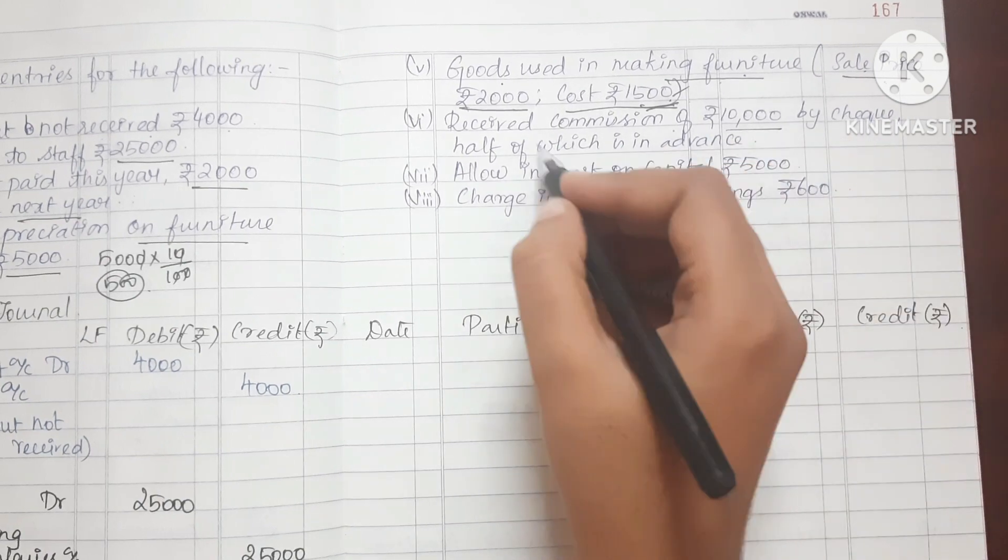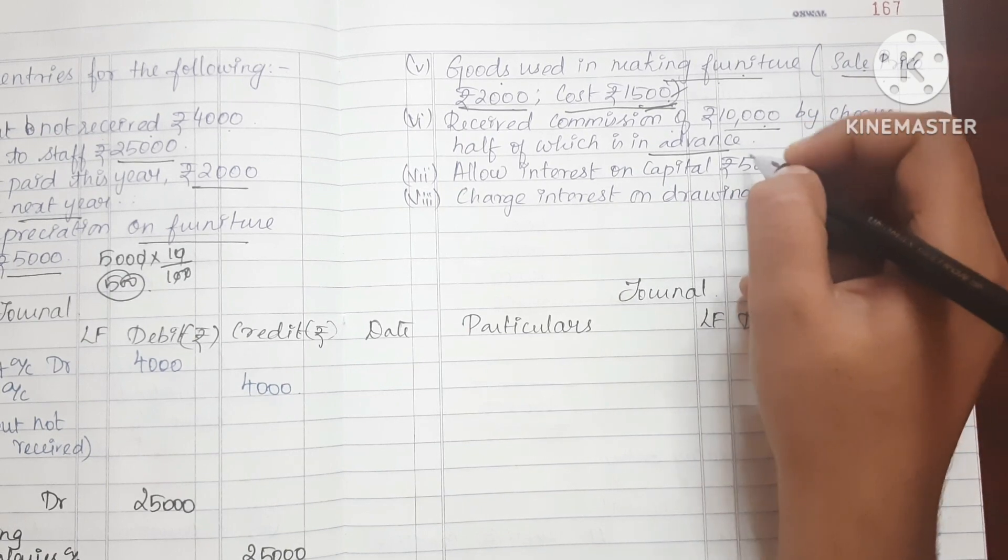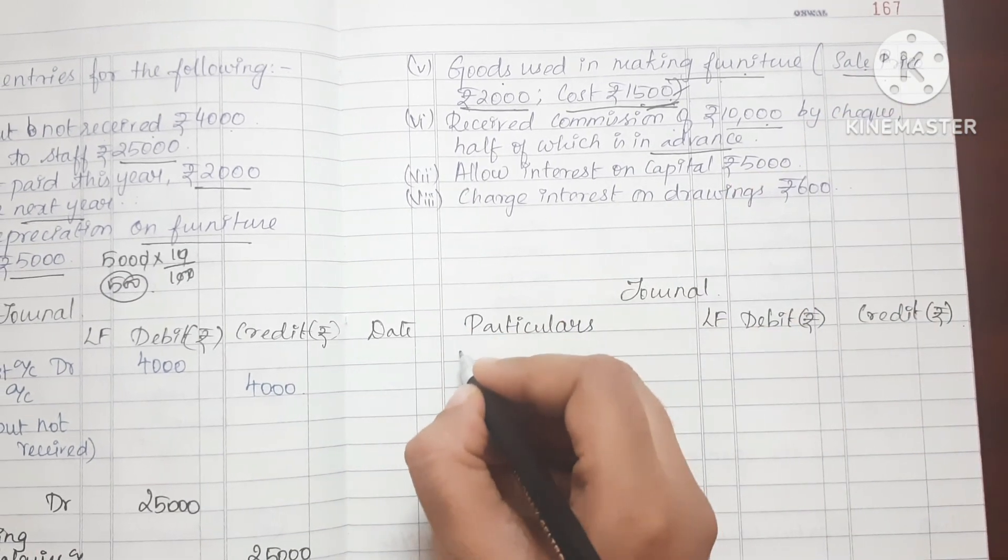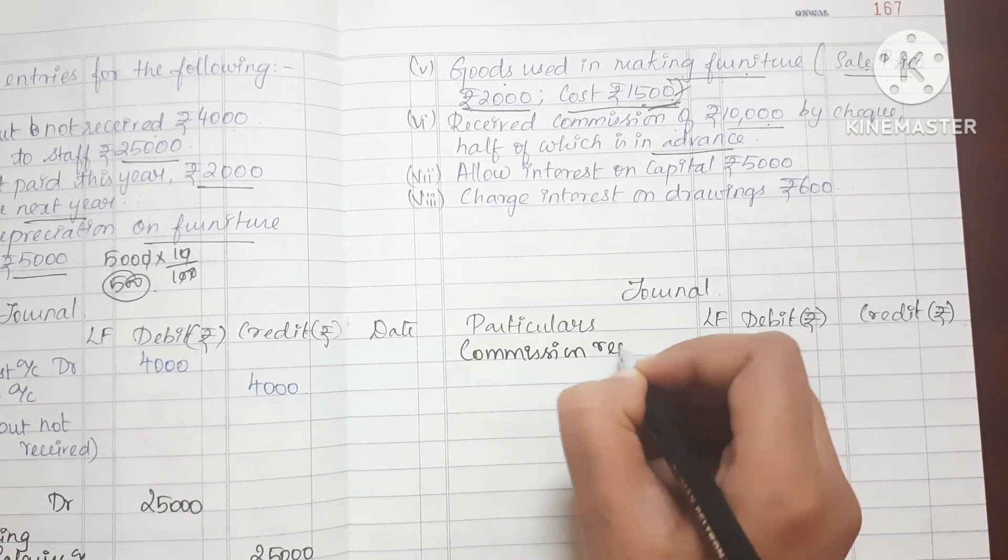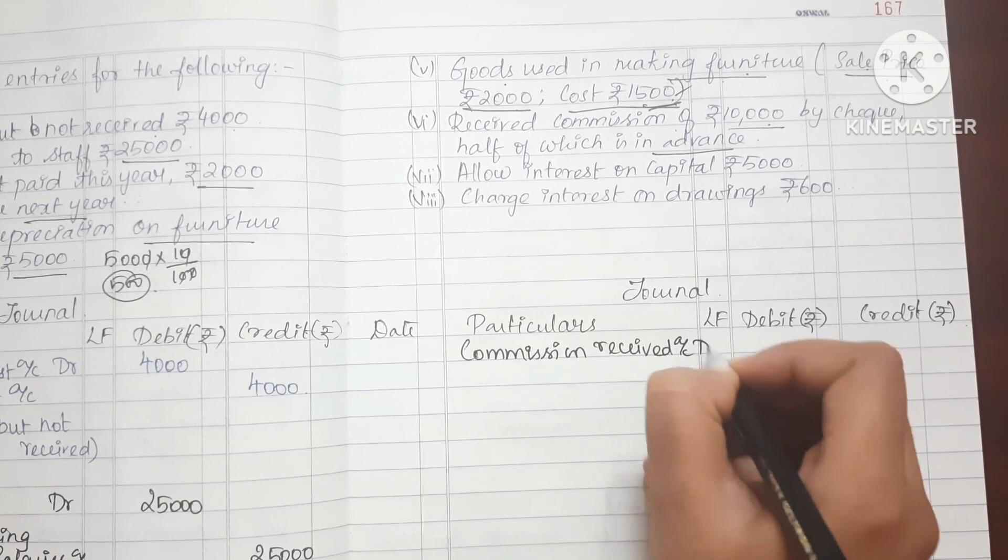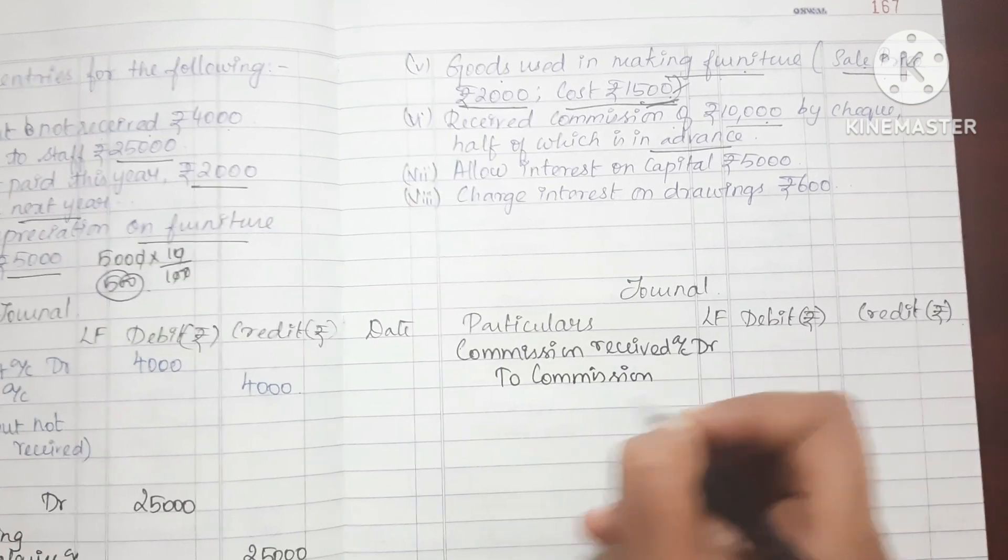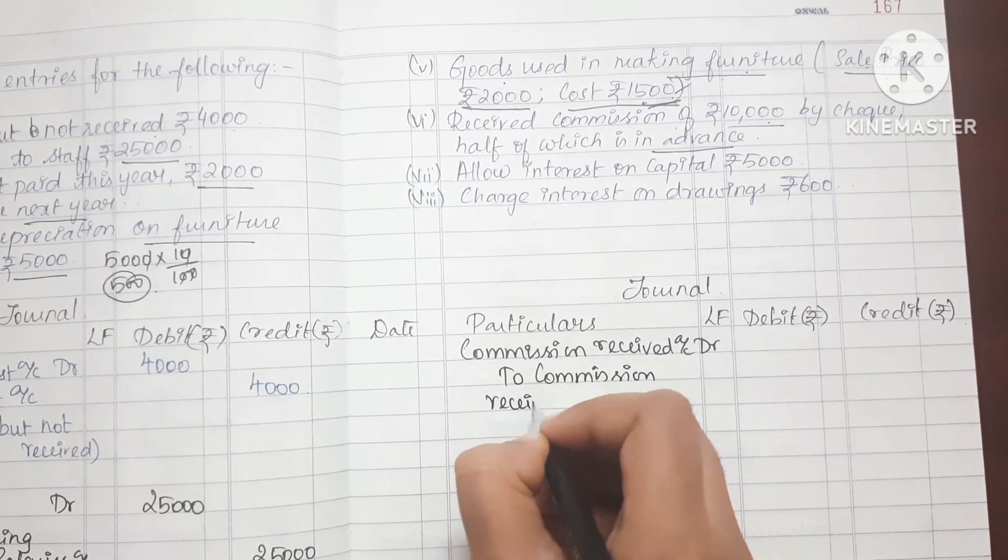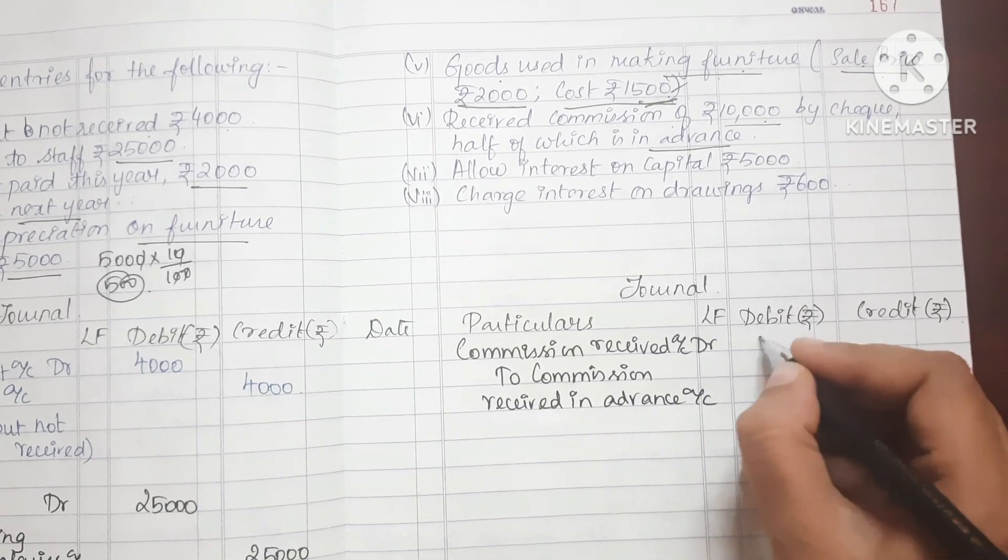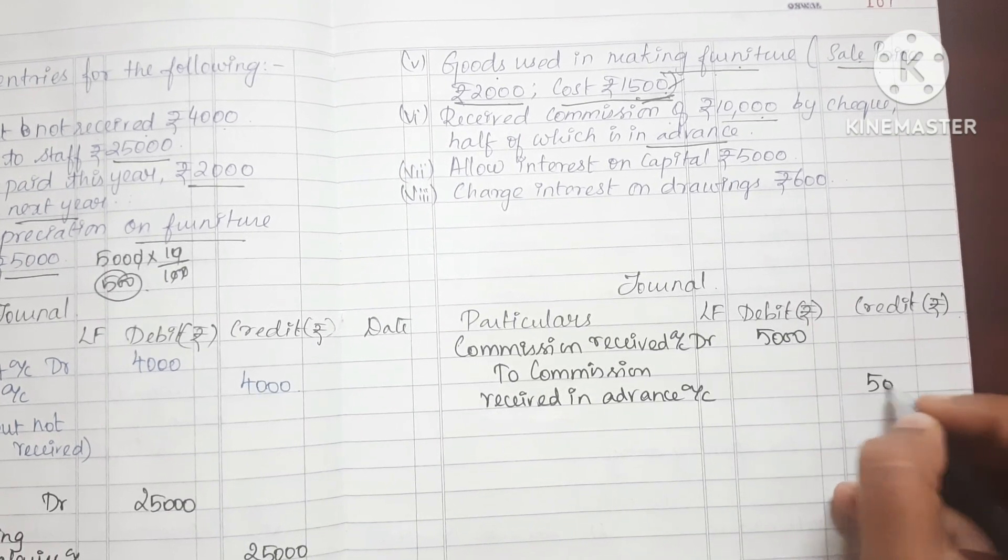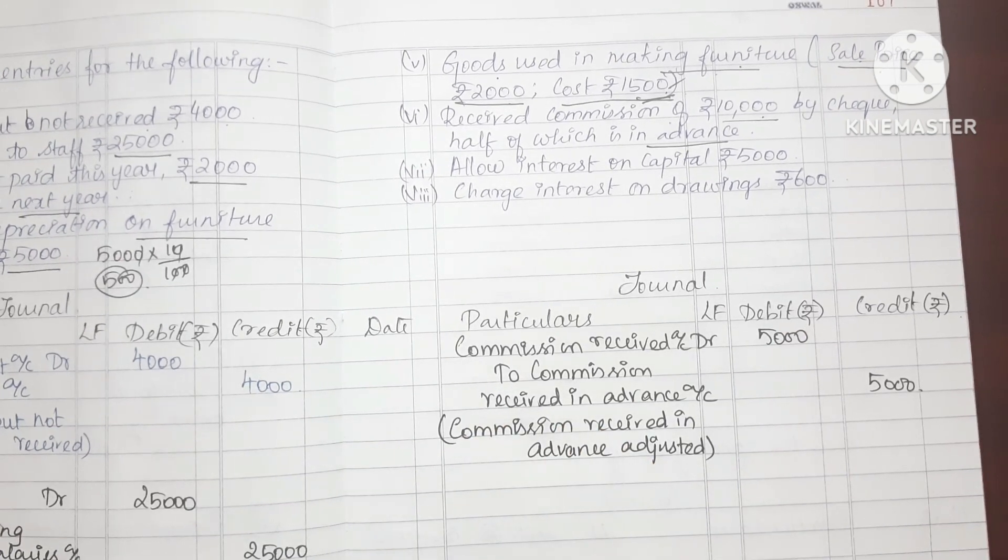Received commission of Rs.10,000 by cheque, half of which is in advance. We receive half the amount in advance. How do we enter the entry? Commission received account debit to Commission received in advance account. The narration is this.